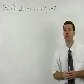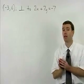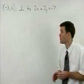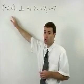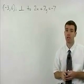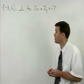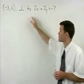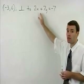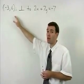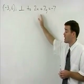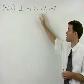To write the equation of a line we need a point and a slope. Here we're given a point but we don't have a slope. Remember however that if our line is perpendicular to this line, the slope of our line will equal the negative reciprocal of the slope of this line.